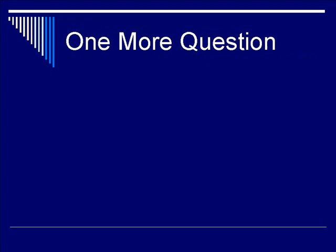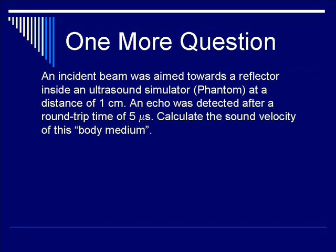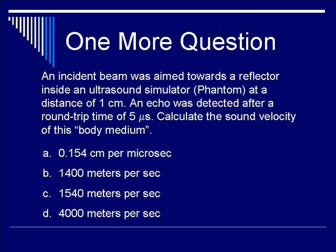One more question: An incident beam was aimed towards a reflector inside an ultrasound simulator, otherwise known as a phantom, at a distance of 1 centimeter. The echo was detected after a round trip time of only 5 microseconds. Calculate the sound velocity of this body medium. Is the answer A, 0.154 centimeters per microsecond? B, 1400 meters per second? C, 1540 meters per second? Or D, 4000 meters per second? You may pause the video to work on your response.